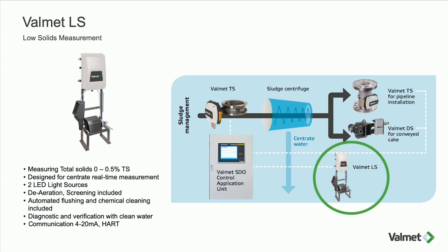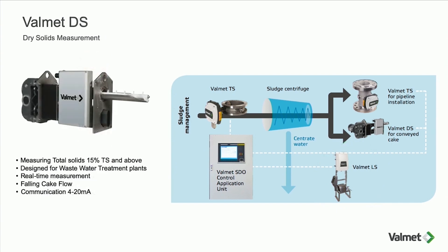The third technology is Valmet DS, designed to measure solids in falling cake flow. It can be installed directly on the outlet of the centrifuge, underneath the centrifuge, or anywhere where there is conveyed sludge falling between conveyors. The sludge falls onto the device, which sits inside the silo, and is taken through and measured using a microwave method. This provides a continuous dry cake measurement on the outlet of the centrifuge.